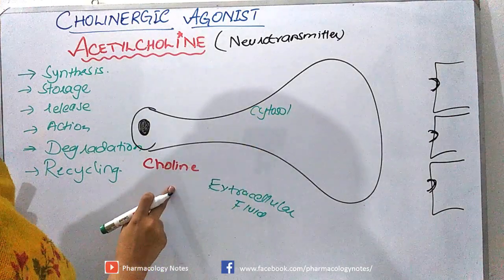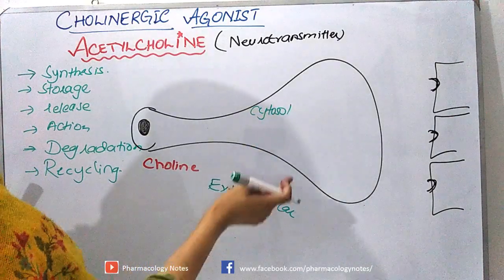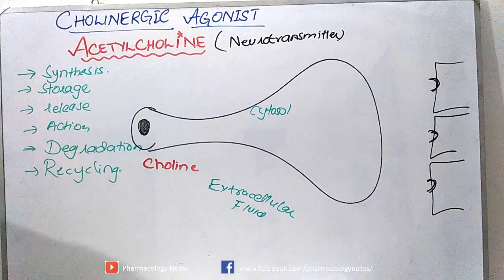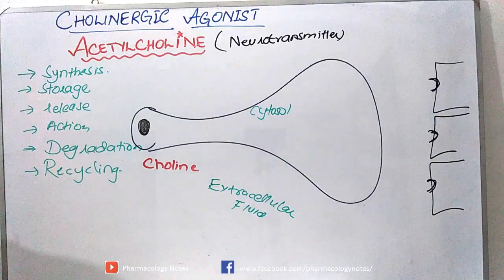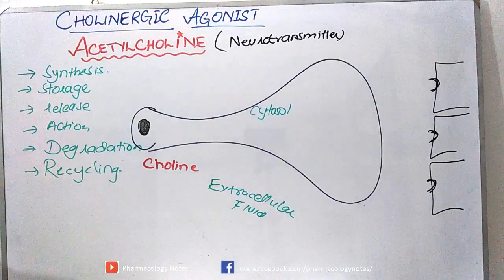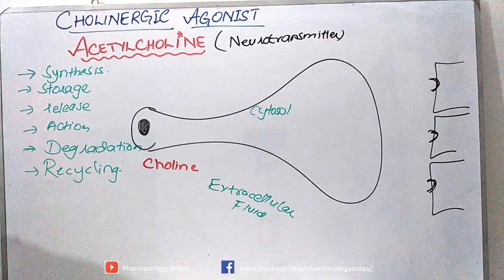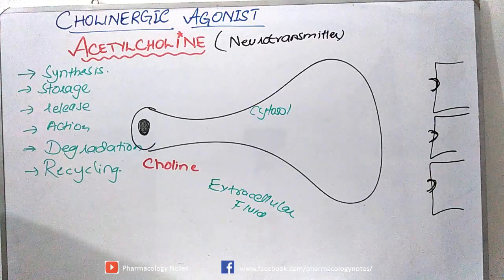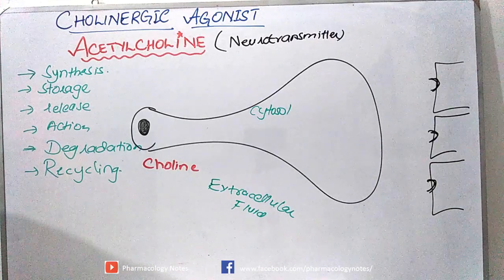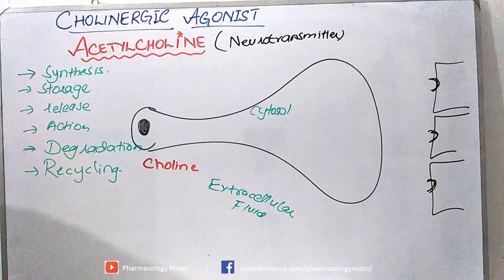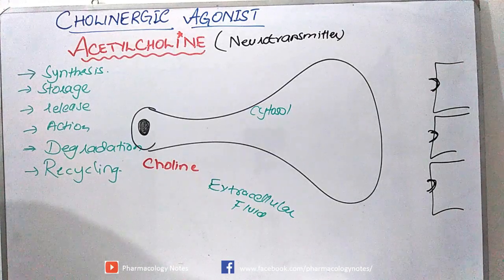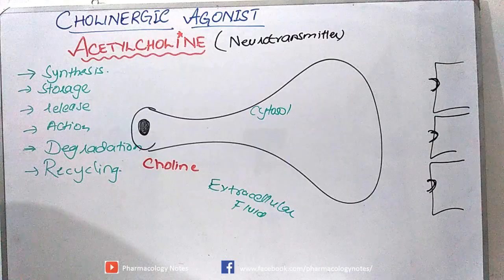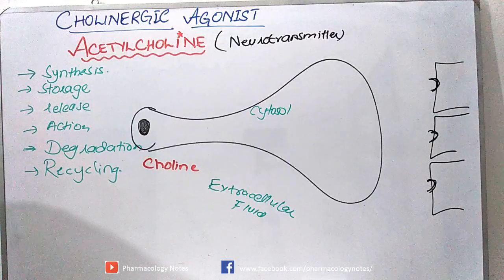Choline is required to synthesize acetylcholine, and it needs to be moved from extracellular fluid into the cytosol. Choline cannot move by itself; it is transported from extracellular fluid into the cytoplasm of the cholinergic neuron by an energy-dependent carrier that co-transports sodium.